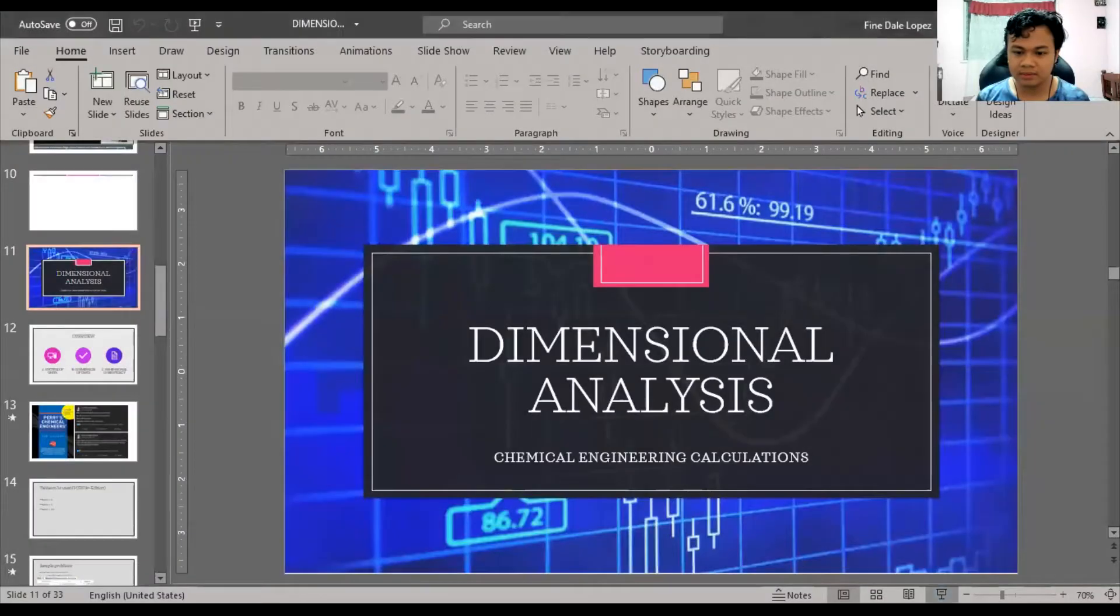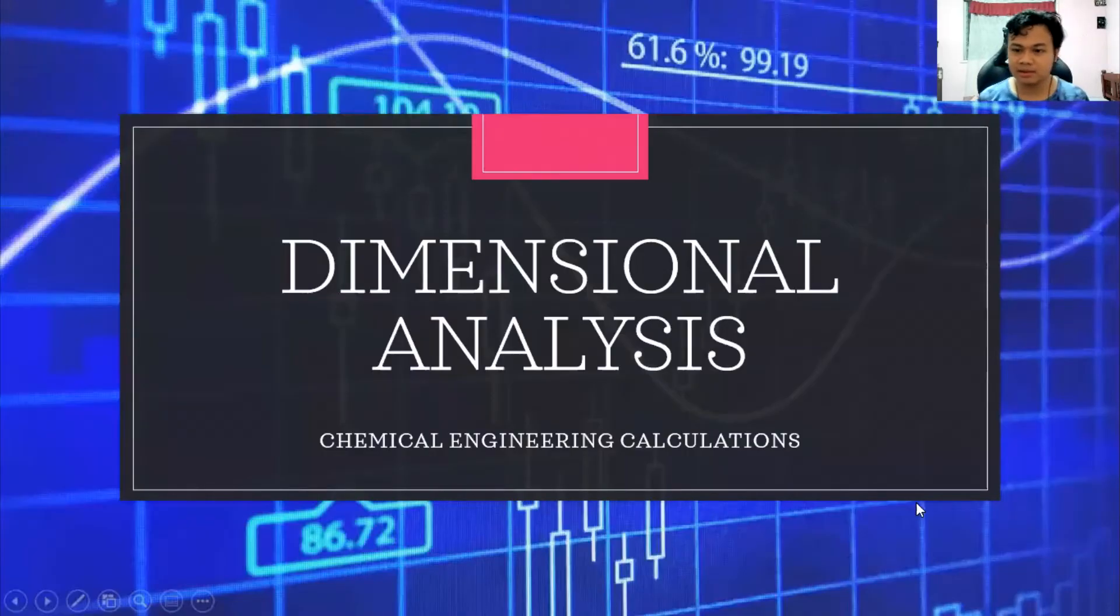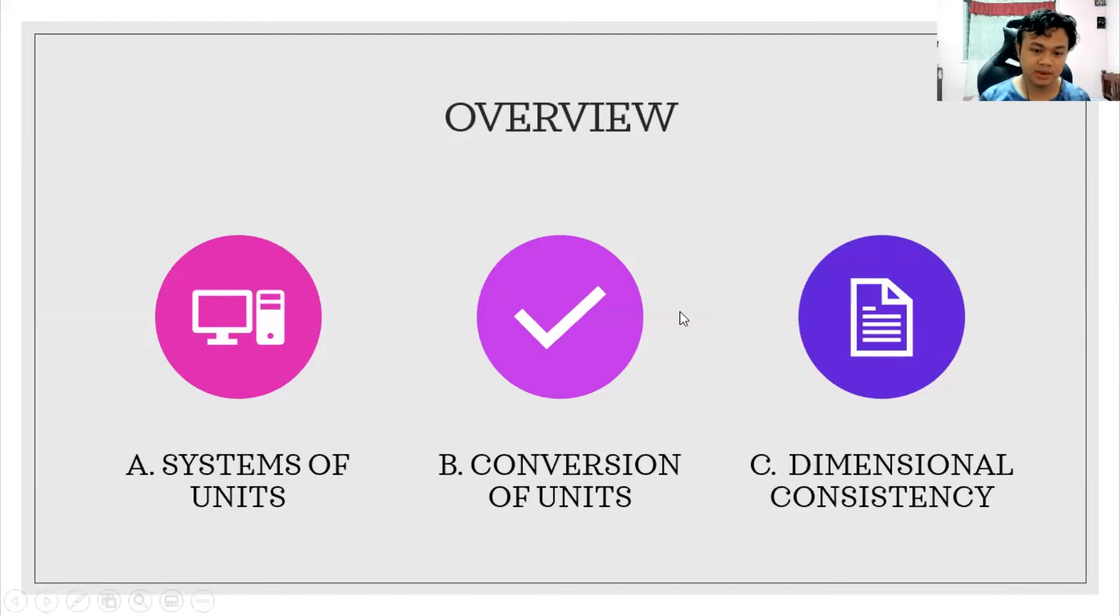Welcome back to the second part of the Chemical Engineering Calculations lesson about Dimensional Analysis. Let's get right into it. This is the second part of our lesson, which is about the conversion of units. Now we will learn how to convert SI to English and English to SI, those types of conversions.